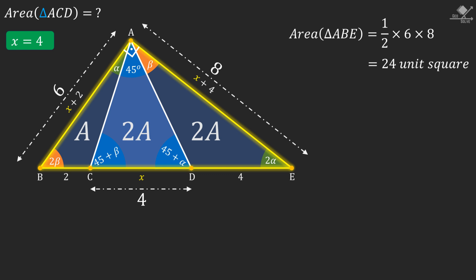So the area of triangle ACD will be 24 × 2/5, and this will be equal to 48/5 square units. And that will be our answer. I'll see you next time.